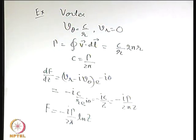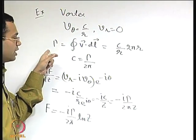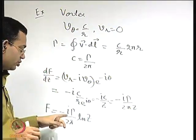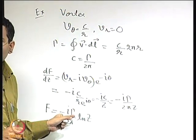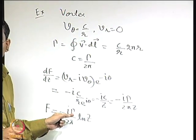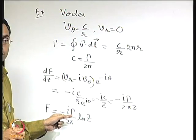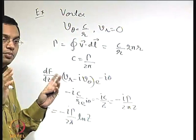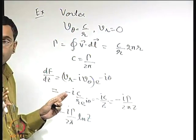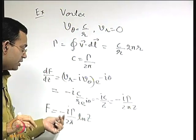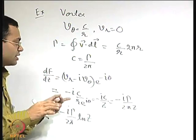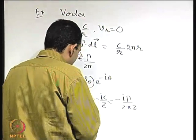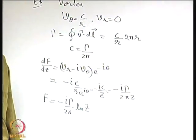We must keep in mind that γ is considered positive if C is positive, which corresponds to anti-clockwise circulation. So the minus sign here is for anti-clockwise circulation and the plus sign is for clockwise circulation. If γ is just a positive number, then the minus sign implies anti-clockwise and the plus sign means clockwise.